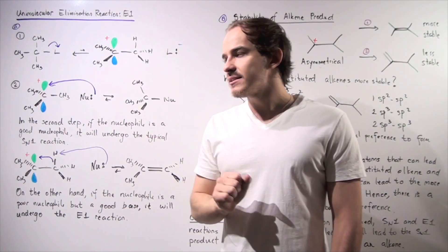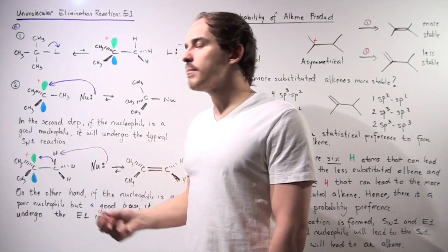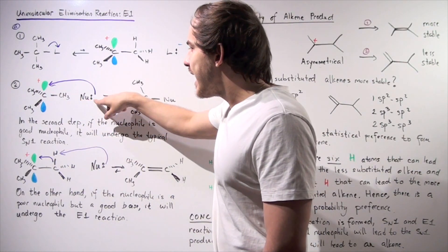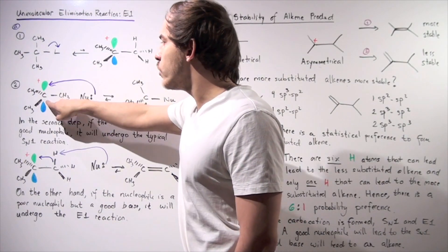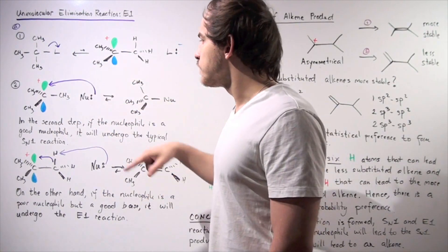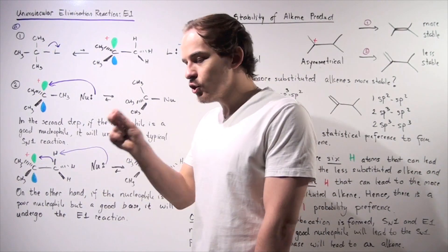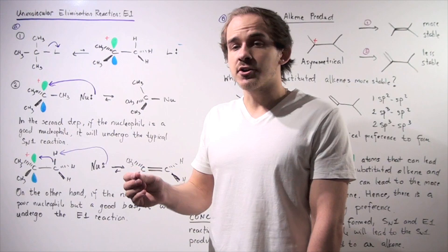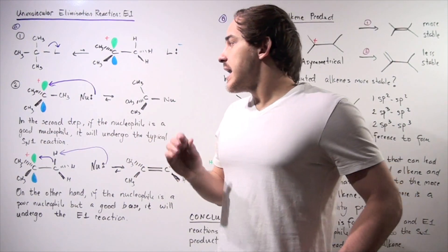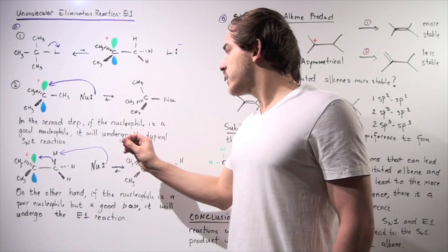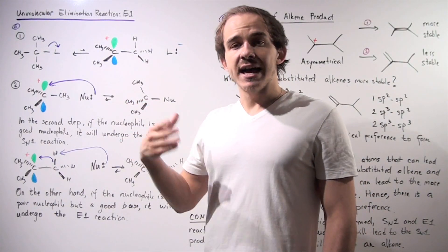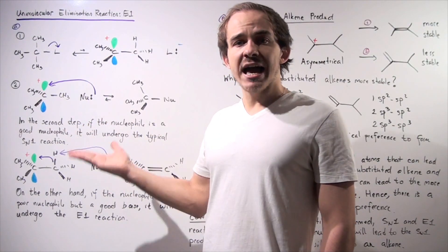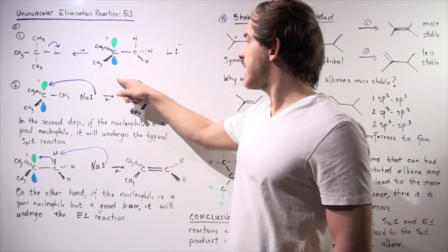The second step of SN1 is the product-determining step, in which our nucleophile uses its pair of electrons to form a bond with the empty 2P orbital on this carbon. Recall that a good nucleophile is a good competitor for an empty 2P orbital. So if the nucleophile is a good nucleophile, it will readily undergo the typical SN1 reaction and produce the typical SN1 product.